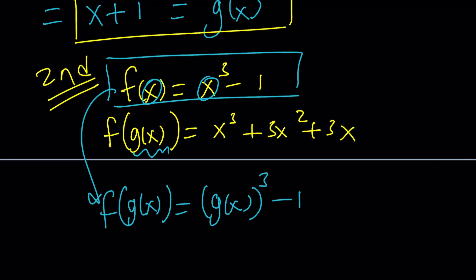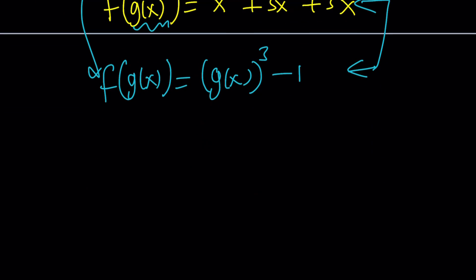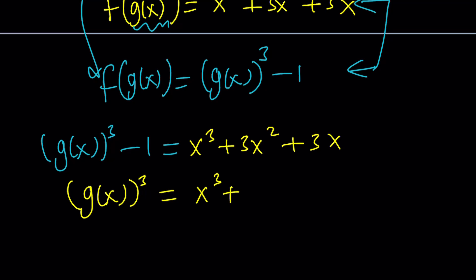Now, here's the thing. Both of these are equal to the same thing. They're both f of g of x. So, they're equal. Let's go ahead and set the right hand sides equal to each other. So, we get g of x cubed minus 1 equals x cubed plus 3x squared plus 3x. And from here, our goal is going to be to solve for g of x. So, let's go ahead and add one to both sides.